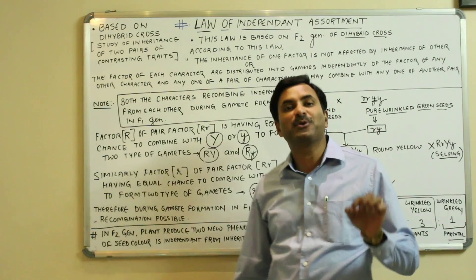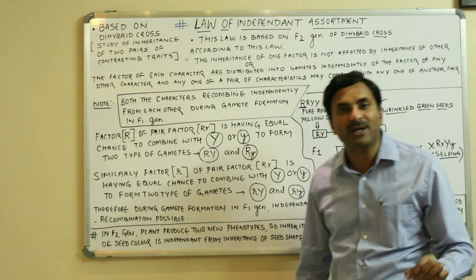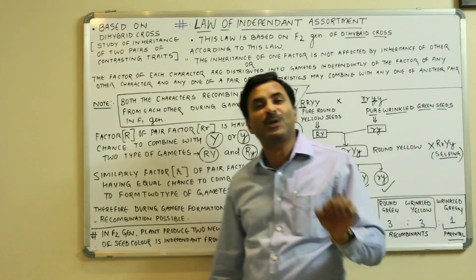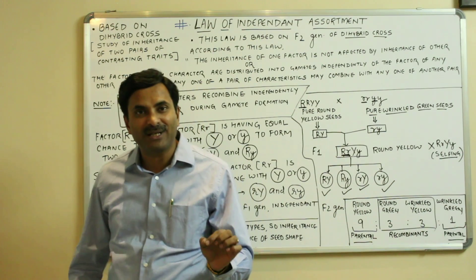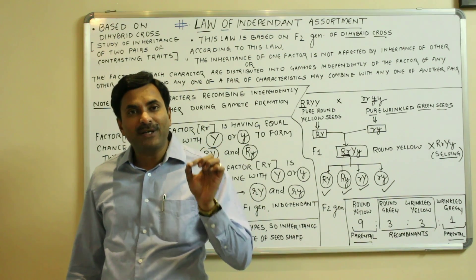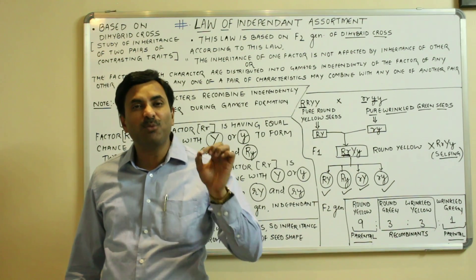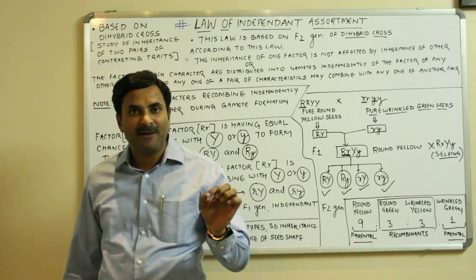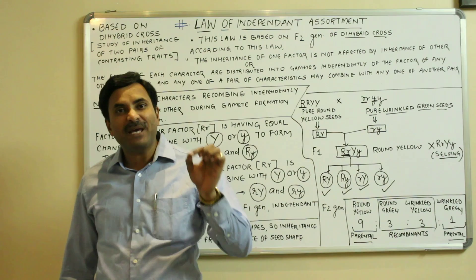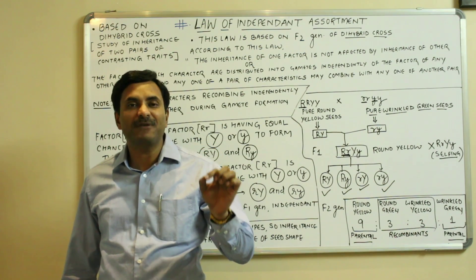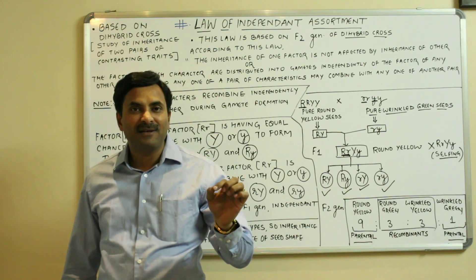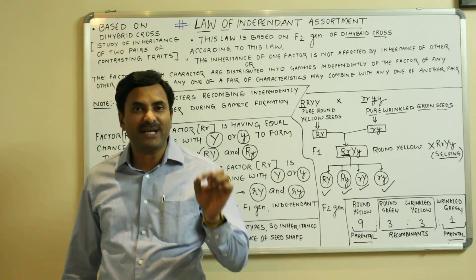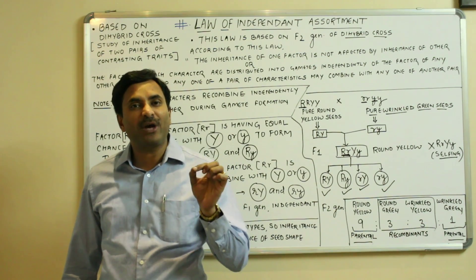Hello to all. Today we are going to discuss about a very important law given by Mendel, known as the law of independent assortment. It was the law given by Mendel which is most controversial and is mostly criticized. This law is based on the dihybrid cross, whereas the previous laws — the law of dominance and the law of segregation — were based on the monohybrid cross.